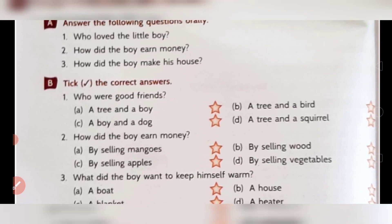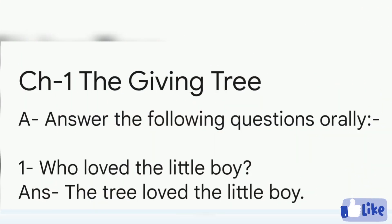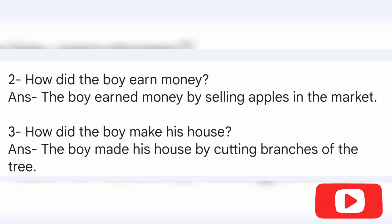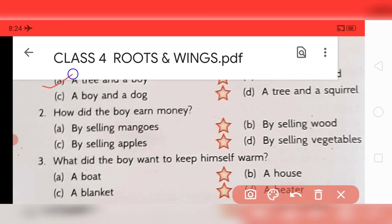Now come to question number B on page number 14: tick the correct answers. In each question there are four options and you have to tick the correct one. Question one: who were good friends? Option A — a tree and a boy. Option B — a tree and a bird. Option C — a boy and a dog. Option D — a tree and a squirrel. The answer is A, a tree and a boy.